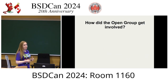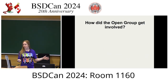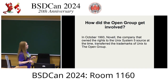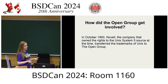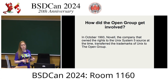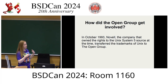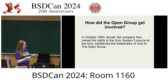How did the Open Group get involved in POSIX? In October 1993, Novell — the company that owned the rights to the Unix System V source at that time — transferred the trademarks of Unix to the Open Group. That's how the Open Group originally got involved, and they are helping to control POSIX to this day.